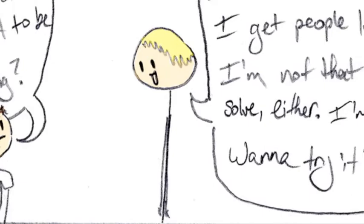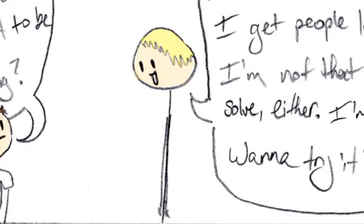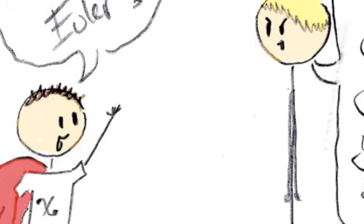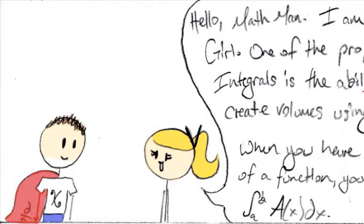Is the answer 1.2? Correct! Thanks, Euler! Don't pronounce my name wrong, Tanner. Just remember that you're solving it with y prime. Don't anti-derive before you solve Euler. Starting chapter 7. Don't forget about me. Are you ready? Go! Go! Go! Hello, math fan. I'm Volume Girl. One of the properties of intervals is the ability to create volumes using them. When you have the area of a function, you can integrate from a to b, a of x, dx.